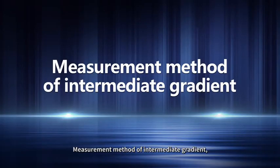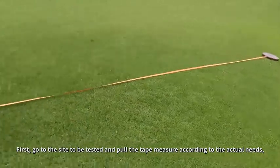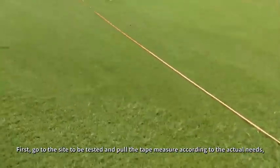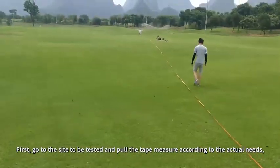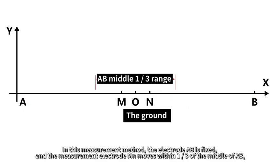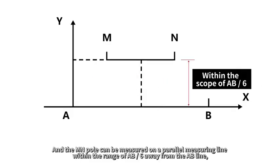Measurement method of intermediate gradient. First, go to the side to be tested and pull the tape measure according to the actual needs. In this measurement method, the electrode A, B is fixed, and the measurement electrode M, N moves within 1/3 of the middle of AB. The MN pole can also be measured on a parallel measuring line within the range of AB/6 away from the AB line.